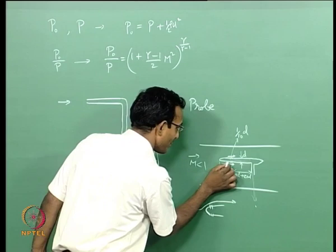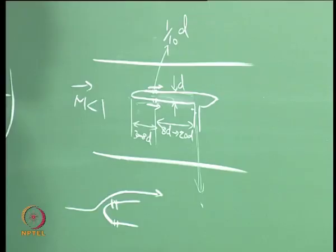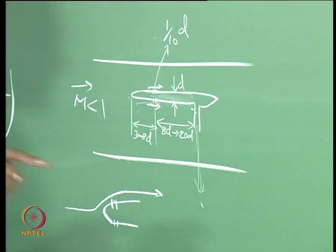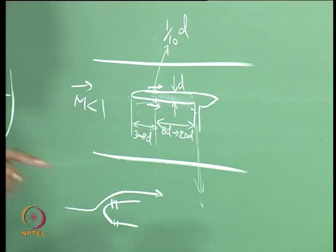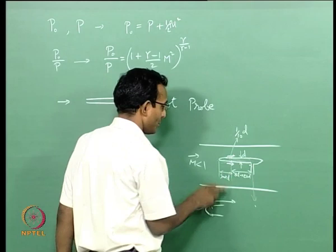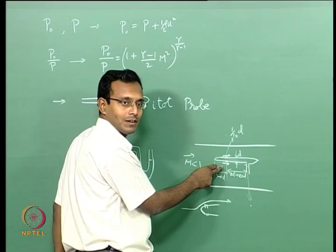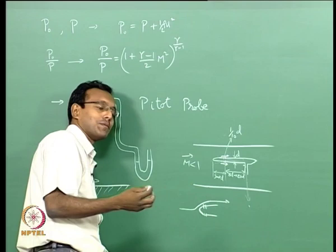The holder-to-hole distance must be more than 10 D because in subsonic flow, the pressure increase due to stagnation at the closed front end propagates upstream. This means the hole would sense elevated pressure unless it is placed far enough from the stagnation region. Keeping it beyond 10 D ensures the stagnation influence does not reach the measurement location.